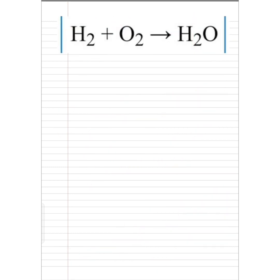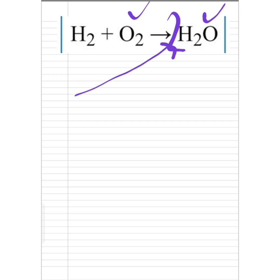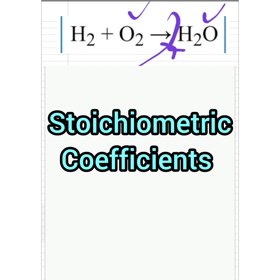Very simple reaction: hydrogen and oxygen are reacting to form water. Let's solve. Oxygen is 2 here on the left, and oxygen is 1 here on the right. So we definitely have to balance this. How? Let's put 2 in front of H2O. These numbers placed in front are called stoichiometric coefficients.